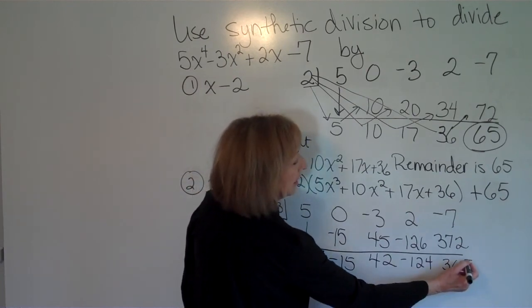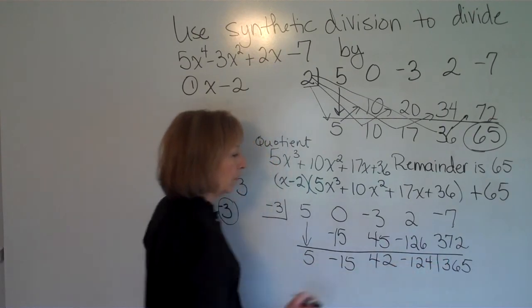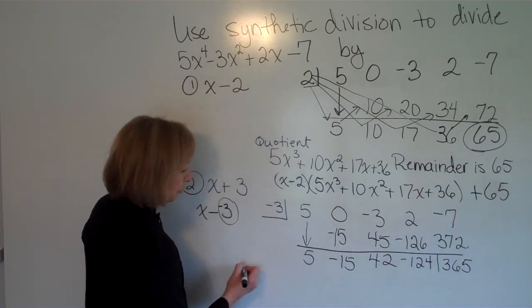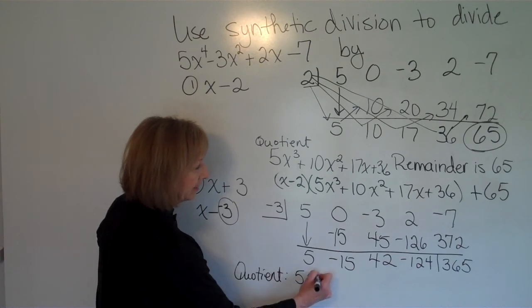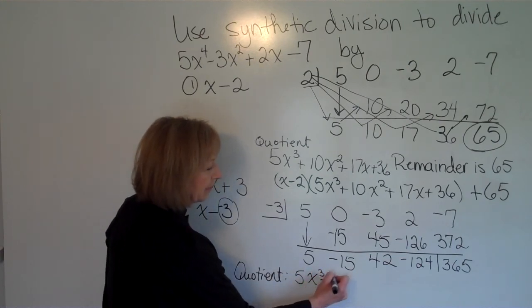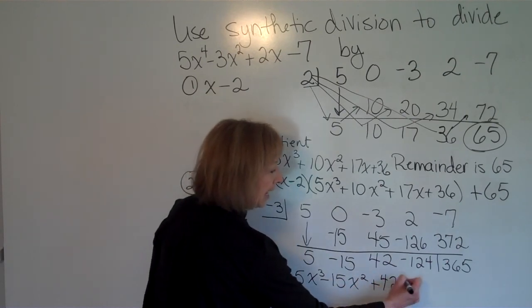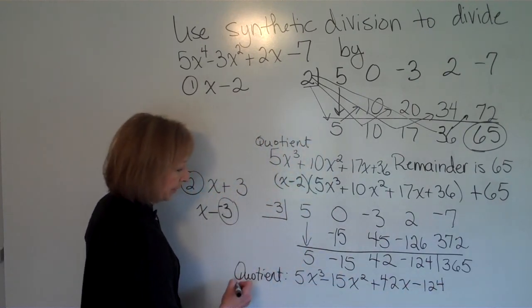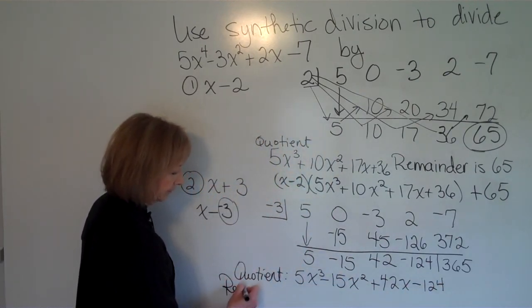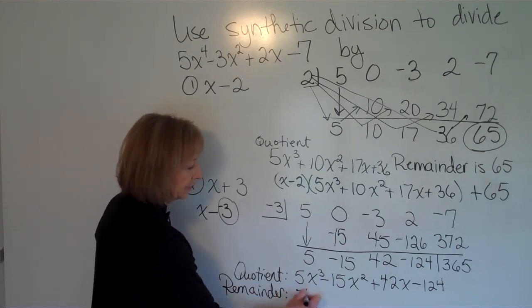When I look at getting the information off this bottom row, my quotient is 5x^3 - 15x^2 + 42x - 124, and the remainder is 365.